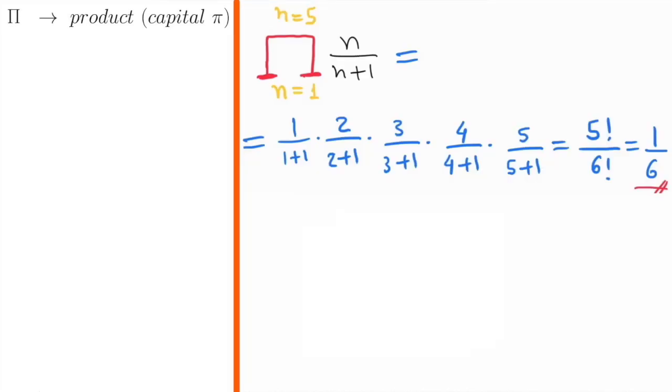Capital pi represents products. For example, pi from n equals 1 to n equals 5 of n over n plus 1 is the multiplication 1 over 1 plus 1 times 2 over 2 plus 1 times and so on until 5 over 5 plus 1. Working out all the math here, this particular example results in 5 factorial over 6 factorial, which is just 1 over 6.